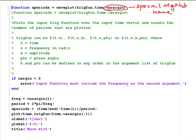The other thing we'll note, though it's not clear in the function statement itself but will become clear below, is that the input trigfun to this function is actually a function itself. Basically what this function does is it plots the input trig function over the input time vector and counts the number of periods that are plotted.